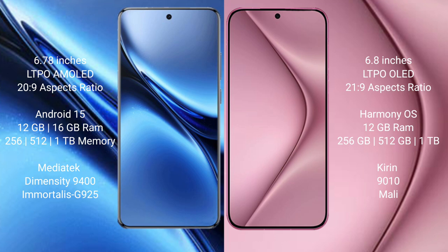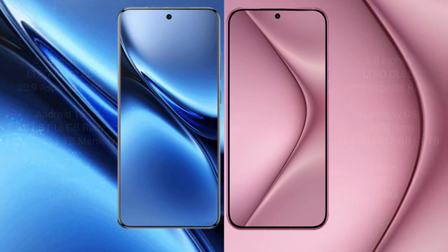The Vivo X200 Pro comes with 12GB and 16GB RAM options, with 56GB, 512GB, and 1TB internal storage, powered by the MediaTek Dimensity 9400 processor and GPU 925. The Wahabepura 70 Pro comes with 12GB RAM and 56GB, 512GB, and 1TB internal storage, with the Kira 910 processor and a small GPU.